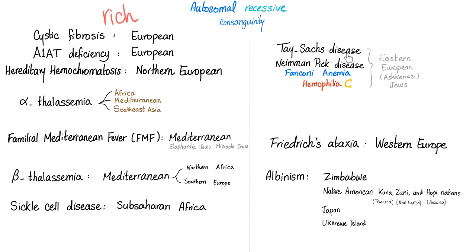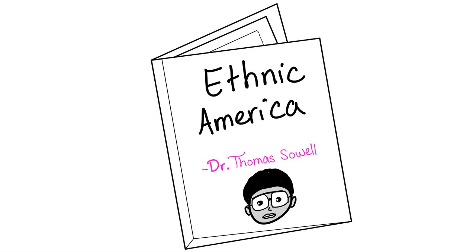Saying Tay-Sachs is commoner in Eastern European Jews is correct, but saying most genetic diseases happen in Jews is wrong. There are over 6,000 genetic diseases, and the Jewish population is less than 25 million out of 7.8 billion — less than 1%. Why more diseases in Ashkenazi versus Sephardic Jews? The answer lies in history, not medicine. Read 'Ethnic America' by Dr. Thomas Sowell, chapter 4.